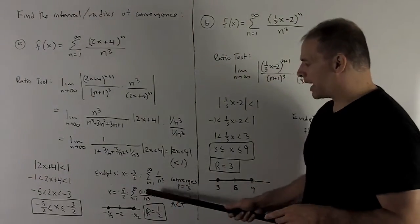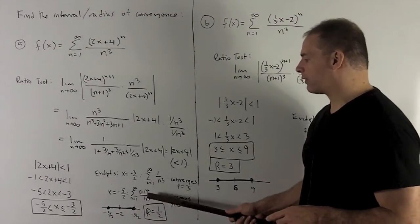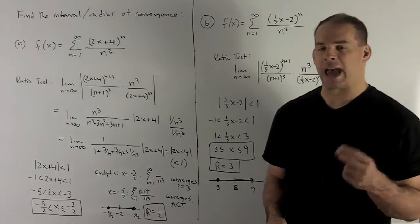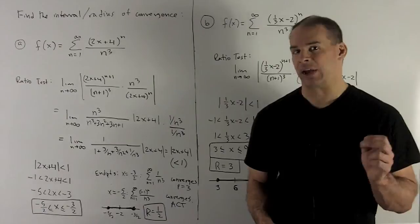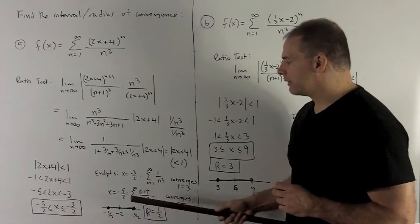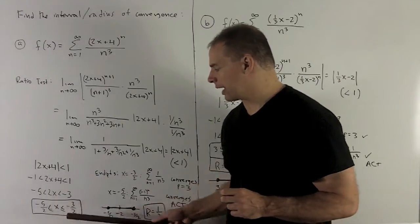So for minus 1 to the n over n cubed, if I throw away the minus signs, I'm just getting 1 over n cubed. We already know that converges. So if I put the minus signs back in, absolute convergence test says that'll converge also. So we're going to get minus 5 halves for the other endpoint. So that's going to be an inequality over there also.